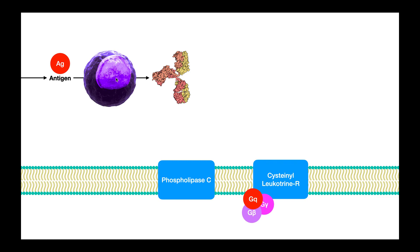Right here is an immune cell — specifically a plasma cell. Plasma cells get exposed to an antigen. Remember, an antigen is just an invading substance, normally a protein that can evoke an immune response. So this plasma cell detects an antigen and then starts producing antibodies against it.